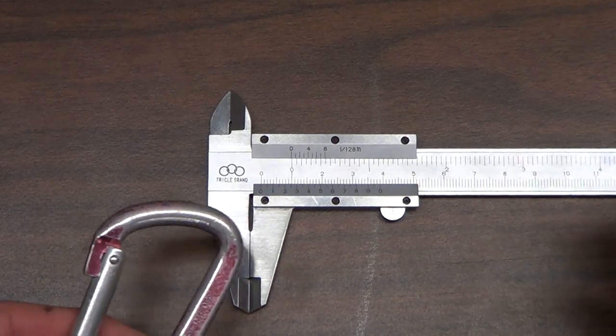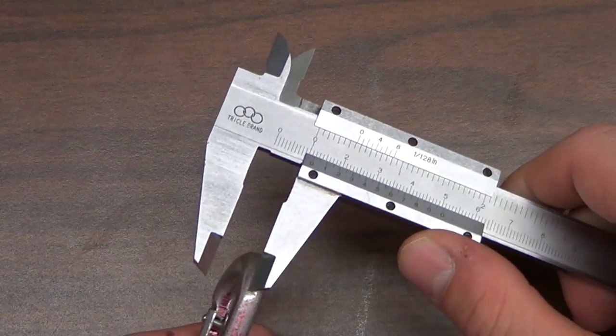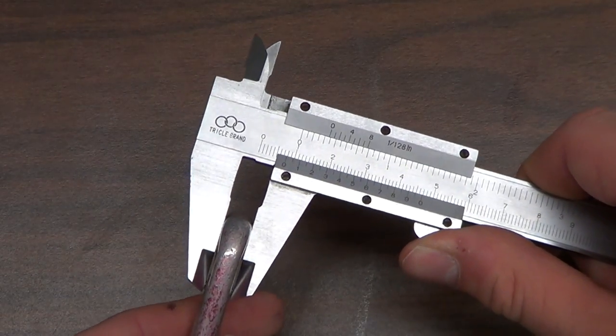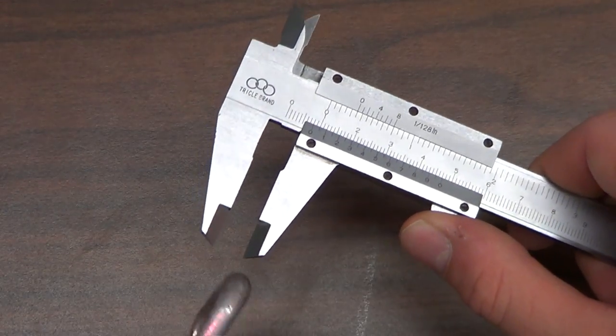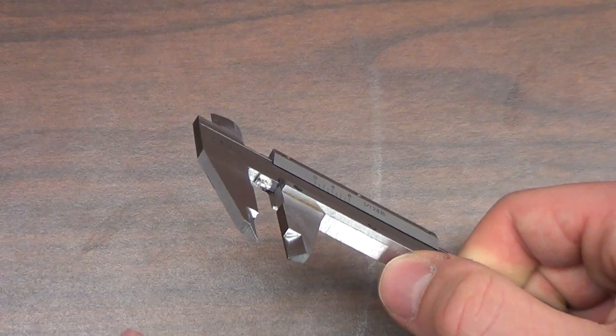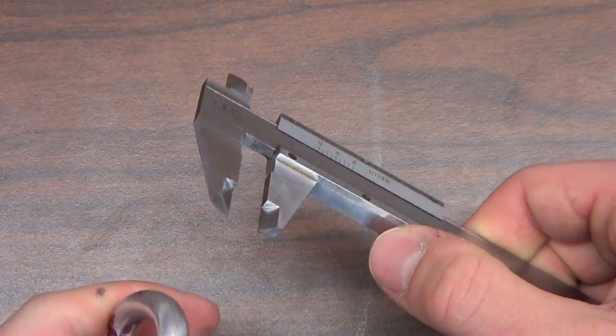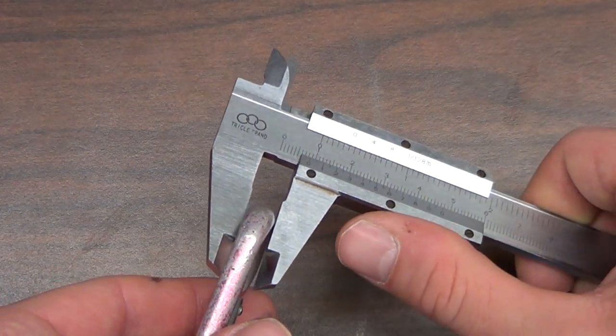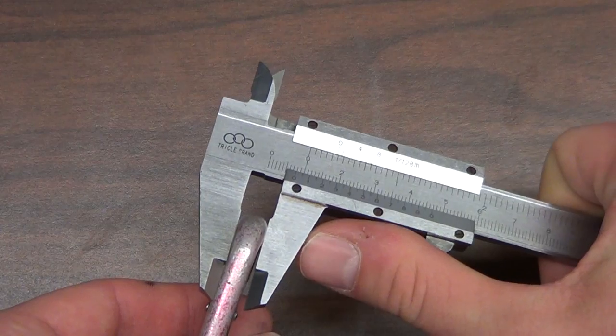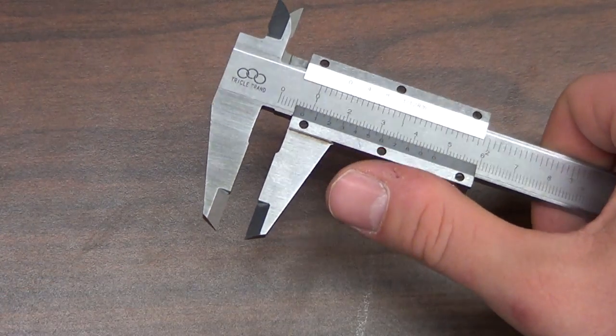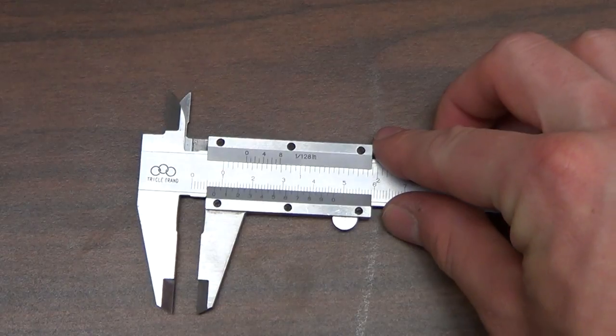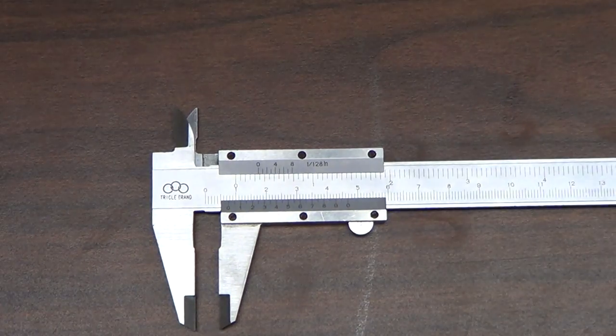We'll put our measurement object here between the teeth of the vernier scale, and we'll close it. When we're measuring something, there's a flat side here. And we'll want to put our device in that and then close it with a little bit of pressure.